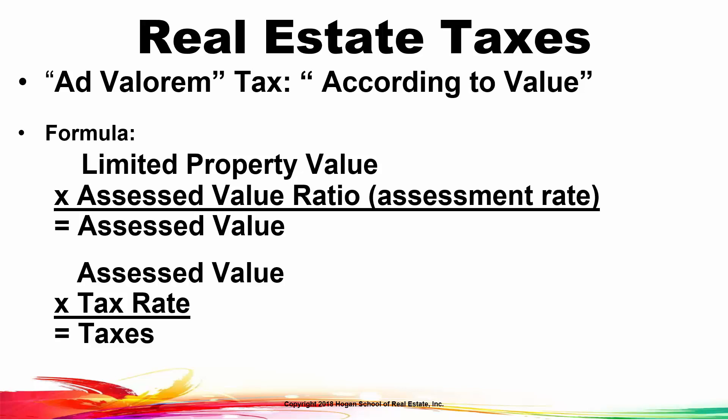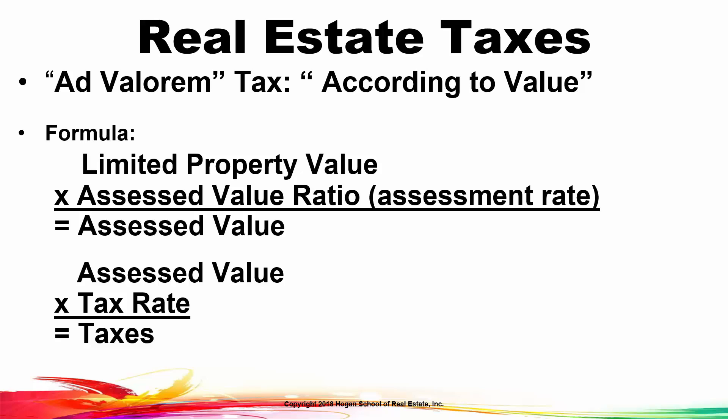Don't be surprised if some problems you encounter do not use those assessed value ratios. But if you remember this two-part formula — take the limited property value or just property value from the question, multiply it by the assessed value rate to get the assessed value, then multiply the assessed value by the tax rate to get the taxes — it's very important that you remember this two-step formula.